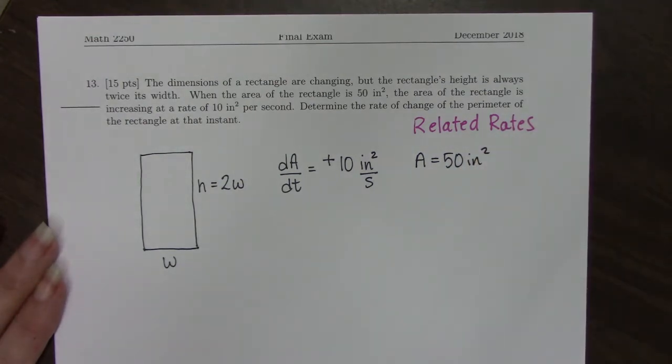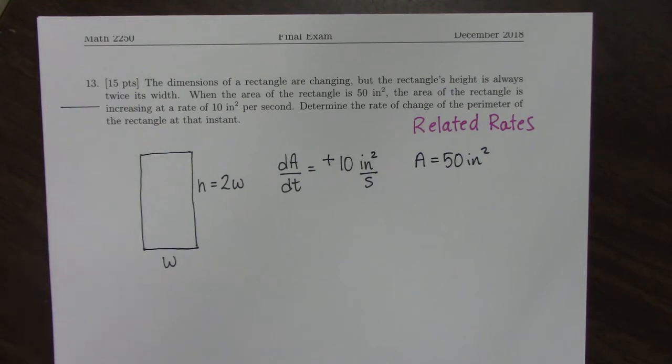It says determine the rate of change of the perimeter of the rectangle at that instance. So the perimeter of any object is found by adding up the lengths of all of its sides. These are not formulas you just necessarily have to memorize. You need to know what a perimeter is, what a surface area is, and you can construct those formulas by simply looking at your picture.